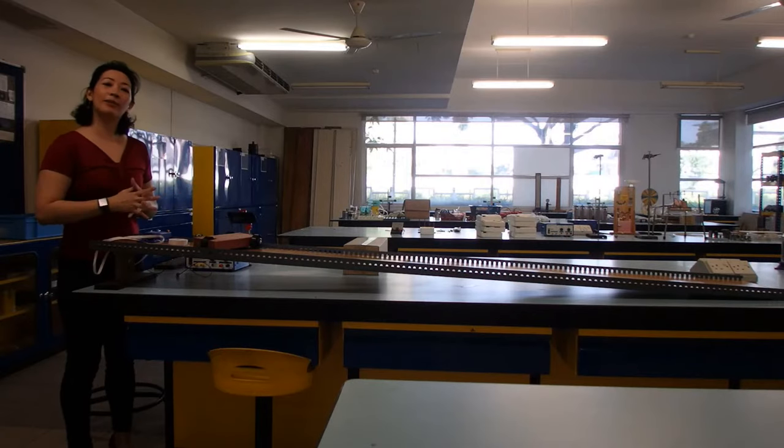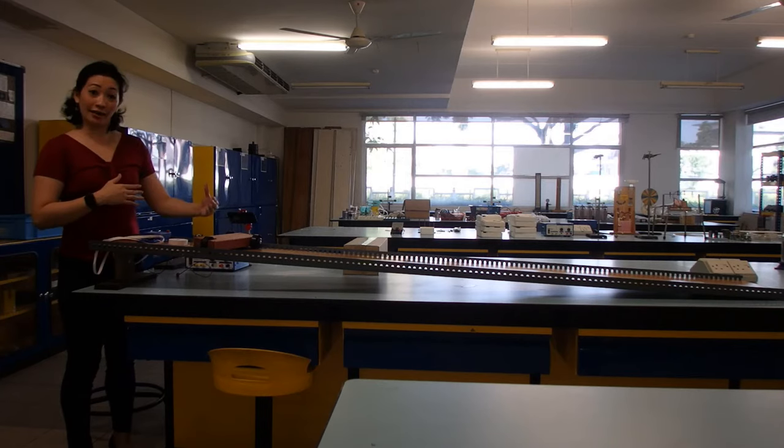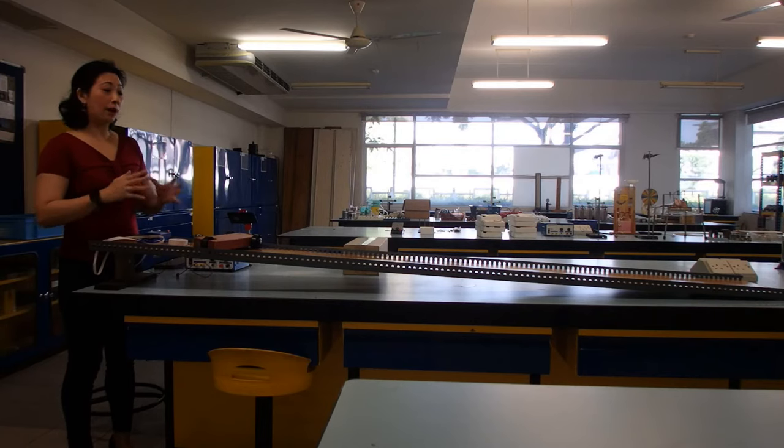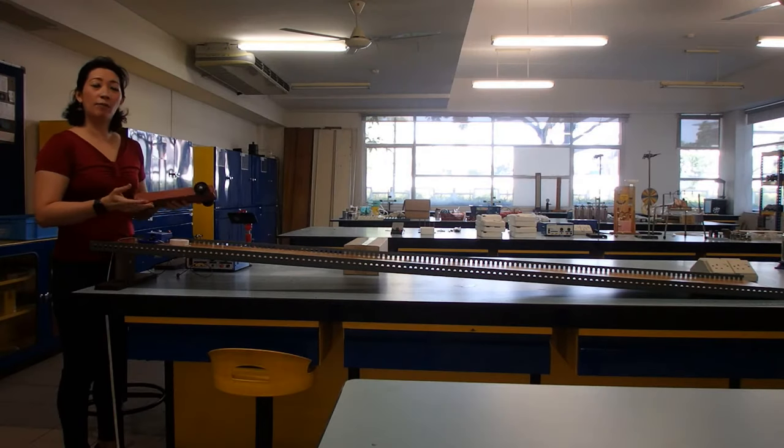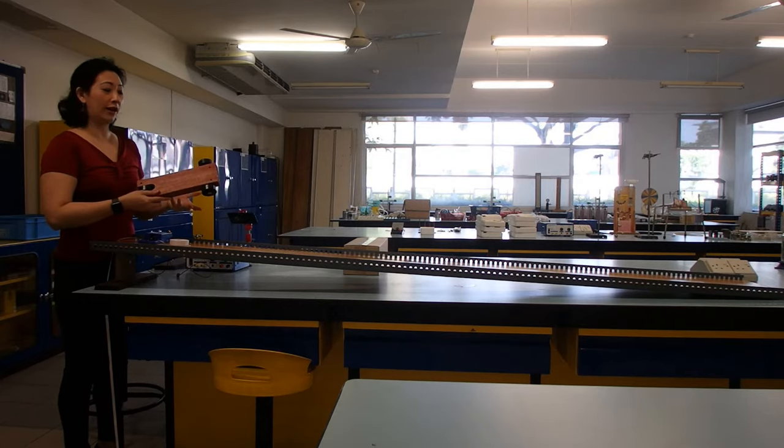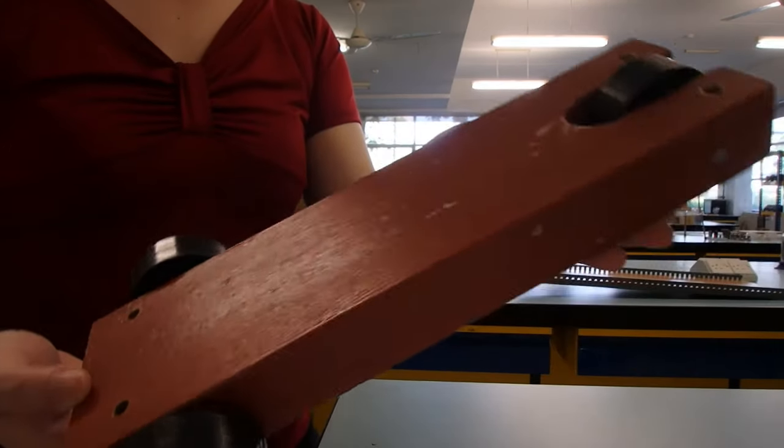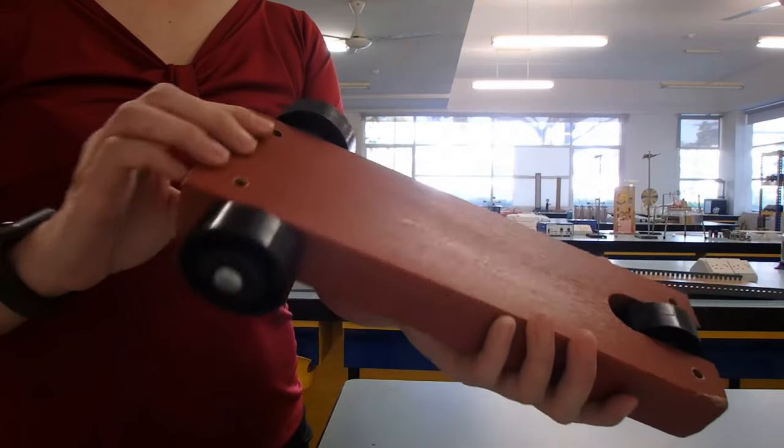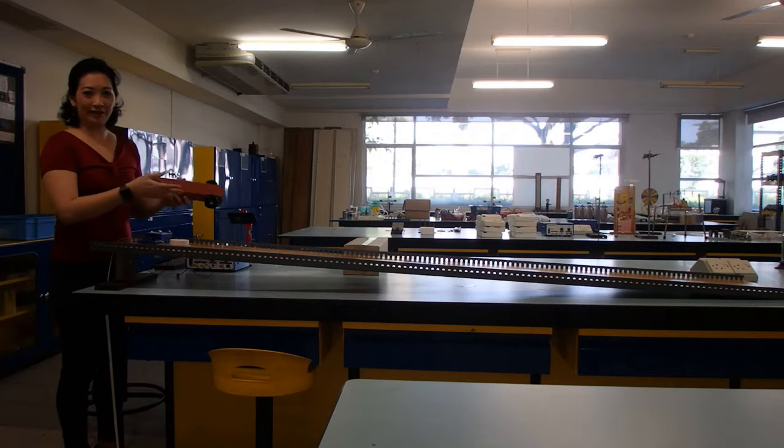Here's the typical experiment that we would conduct to see how the ticker tape with the ticker timer is able to measure motion. In this experiment, we would normally use a trolley and a ramp. This is a typical trolley that you'll find in the physics lab. It's actually just a wooden block with wheels, but we call it a trolley because it is the object that's going to be used in this motion experiment.